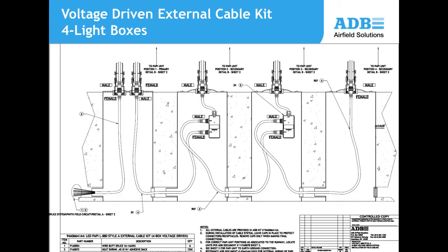The incoming power and any control signals — such as for interlocking with another series circuit — connect to the first PAPI unit. Pre-connectorized cables then run up to connector boxes and on to each successive PAPI light unit in the string.